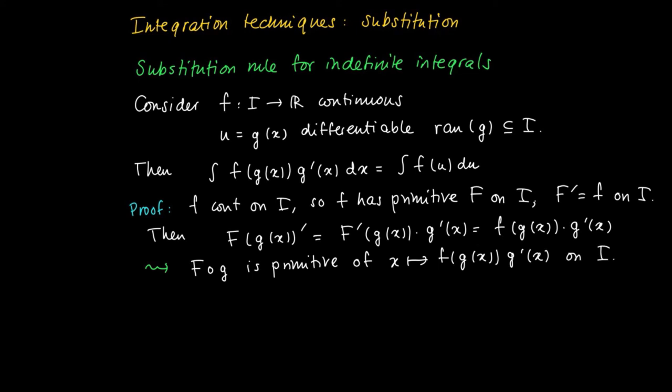then we know that the indefinite integral stands for the class of all primitives of the function f of g of x times g prime of x. Now this can be written in general as the capital F of g plus a constant. So the class of primitives, two members in the class of primitives differ by a constant. But F of g of x also equals F of u, since u equals g of x plus c.